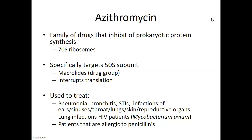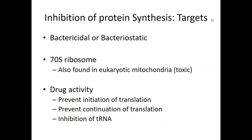Since everything bacterial has a 70S ribosome and we don't — with the exception of mitochondria — you can tolerate a pretty high dose of this drug. When we talk about inhibiting protein synthesis in general, this can be bactericidal or bacteriostatic. If you interfere with an enzyme needed for replication, the cell might still be alive but no longer dividing. But you can also see a scenario where interfering with protein synthesis could lead to the death of the bacteria if it can't make proteins.